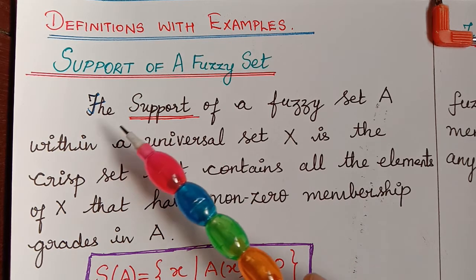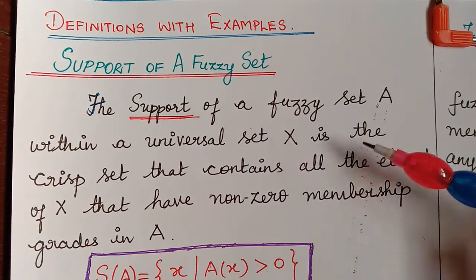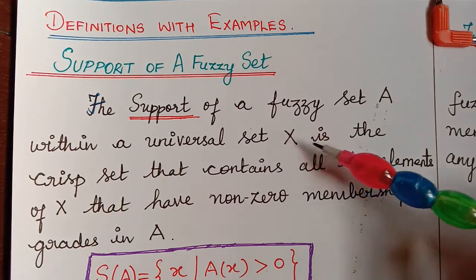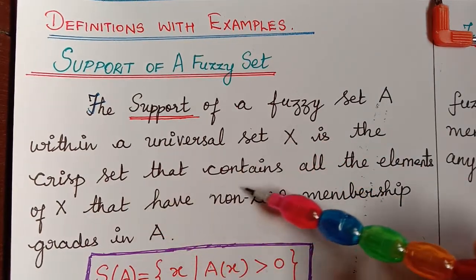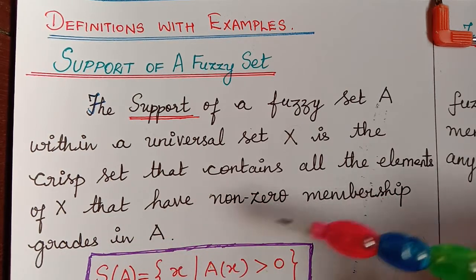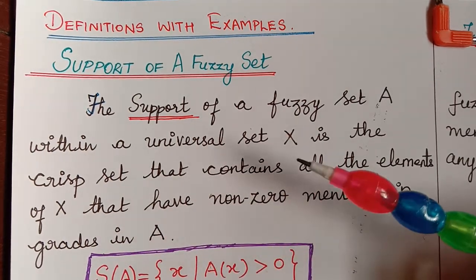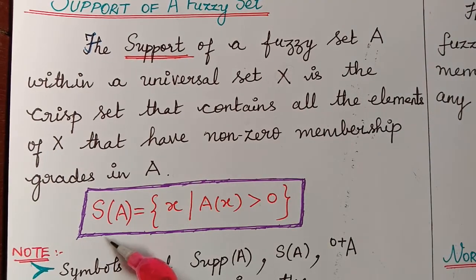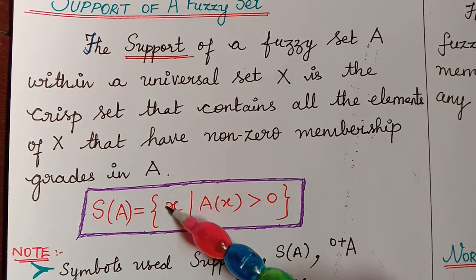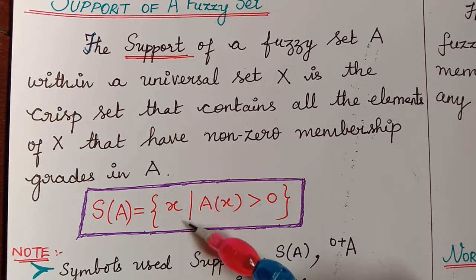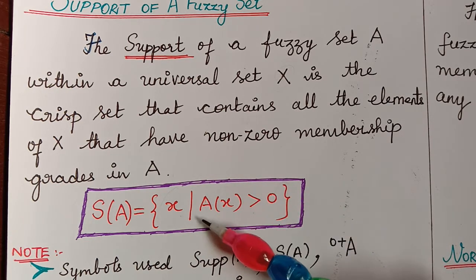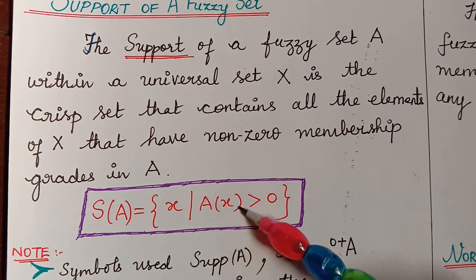The first definition is the support of a fuzzy set A. The support of a fuzzy set A within a universal set X is the crisp set that contains all the elements of X that have non-zero membership grades in A. Simply, the support of a fuzzy set A is those elements of the universal set X such that its membership grade is strictly greater than 0. A(x) represents the membership grade.